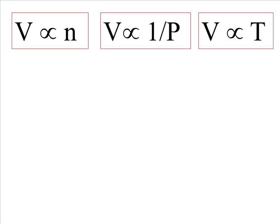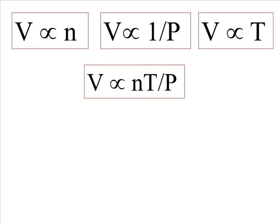Then we have volume being proportional to temperature. And that is Charles' law. As volume goes up, temperature goes up. We now can combine all three of these into one relationship that says volume is proportional to number of moles times temperature over pressure.